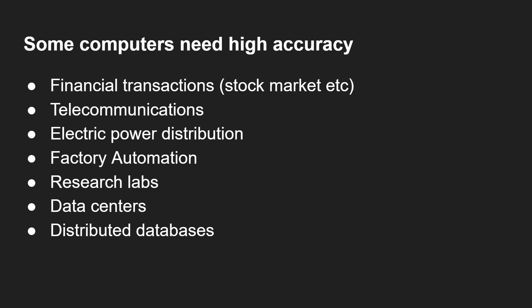There are some computers that need very, very high accuracy for time. For example, financial transactions in a stock market — fractions of a second — who got that buy order or sell order in first becomes important. The same goes for telecommunications, power distribution, factory automation — all of these areas need sub-one-second accuracy. Research labs doing particle physics research need even greater accuracy of time. Data centres need accurate time, and distributed databases particularly need accurate time. It's not only for simple things like social media or buying a packet of tissues online — there are areas where really, really high accuracy is critical.